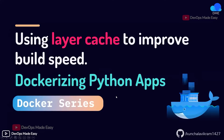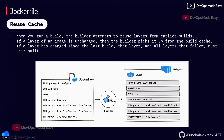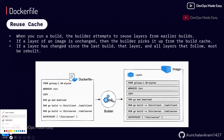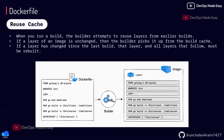Now we will talk about how to use layer cache to improve build speeds, and also understand how to Dockerize Python applications. We already seen how to Dockerize Python applications; we will see what is the use of layer cache and how you order your instructions in a Dockerfile. We know that when you run a build, Docker will try to build each and every instruction as a separate layer, and Docker will try to use the layers which are already built last time and which are not changed from your last build time. This is called cache.